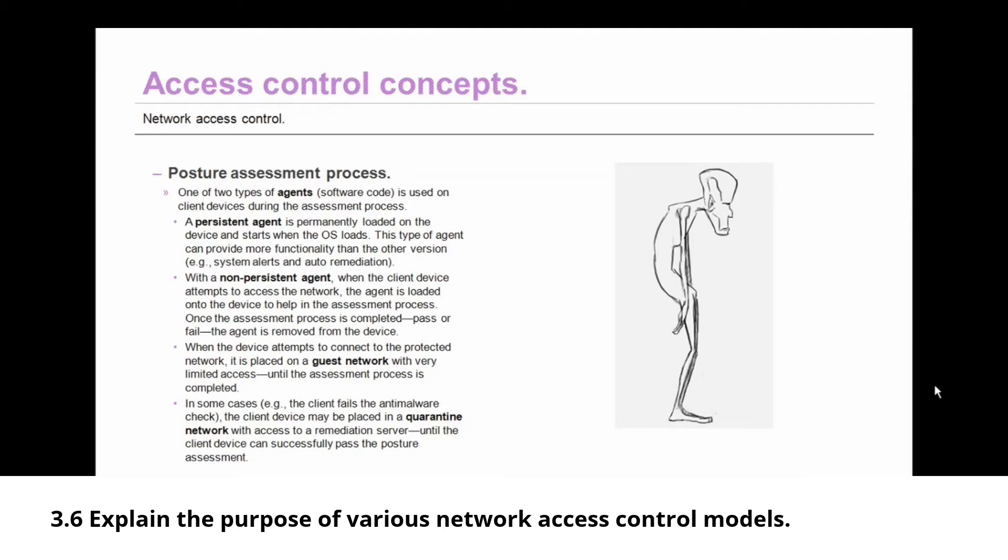When devices attempt to connect to the protected network, they are placed on a guest network with very limited access. They are left on the guest network until the assessment process is completed. In some cases, particularly when the client fails the anti-malware check, the client device may be placed into a quarantine network, which will only have access to a remediation server, and it cannot move beyond that quarantine network until it can successfully pass the posture assessment.